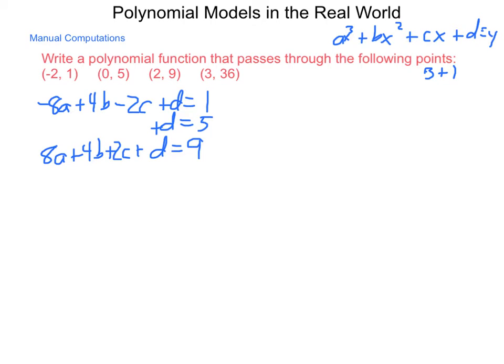And last, if I substitute in a 3, I will get 27a plus 9b plus 3c plus d equals 36. We can use these to start narrowing things down. And what I need in the end is to know what a, b, c, and d are all equal to.